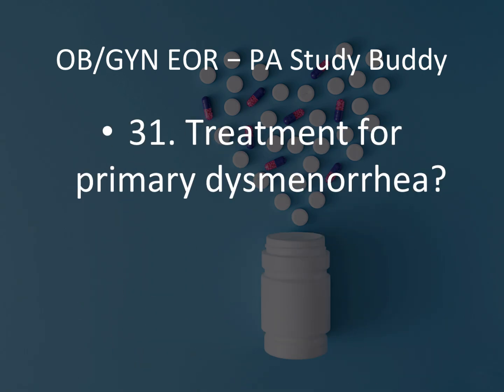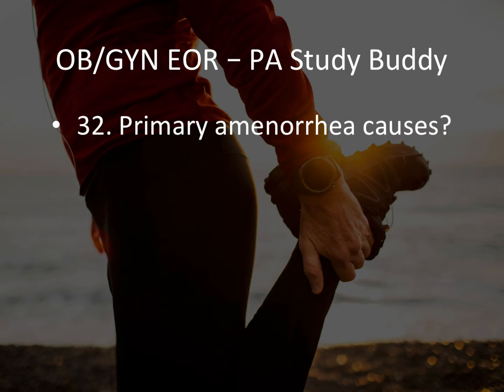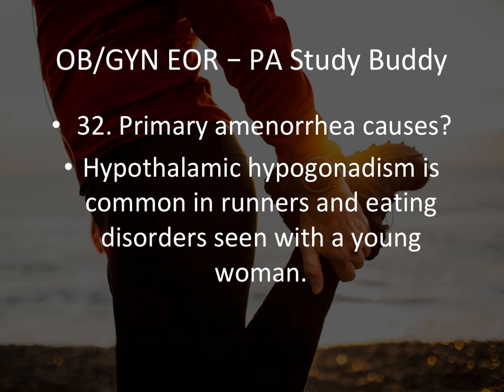Question 31: Treatment for primary dysmenorrhea — ibuprofen. Question 32: Primary amenorrhea causes — hypothalamic hypogonadism is common in runners and eating disorders, seen in young women. If the stem tells you the patient is a young athlete or runner, you should be thinking hypothalamic hypogonadism.